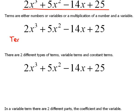my first term would be 2x³. Then my second term here would be 5x². The third term would be -14x. And the last term would be 25.